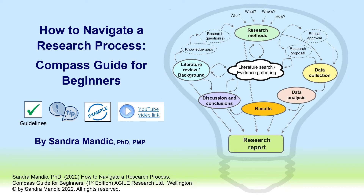The final part of the book offers recommendations and tips for preparing effective research presentations to different audiences, writing research abstracts to summarize your project and key findings, and preparing and submitting scientific journal articles. To see more about the content and infographics included in this book, check out Compass Guide research training videos on the Agile Research YouTube channel.